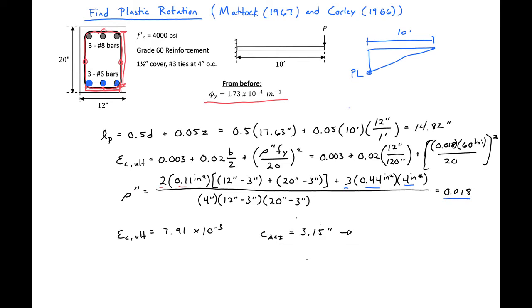We can use that then with our epsilon C ultimate to find our ultimate curvature which is just equal to 7.91 times 10 to the negative third divided by C, 3.15 inches. Which will give us a curvature of 2.51 times 10 to the negative third per inch.